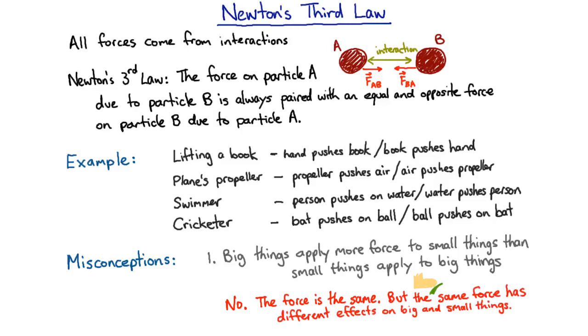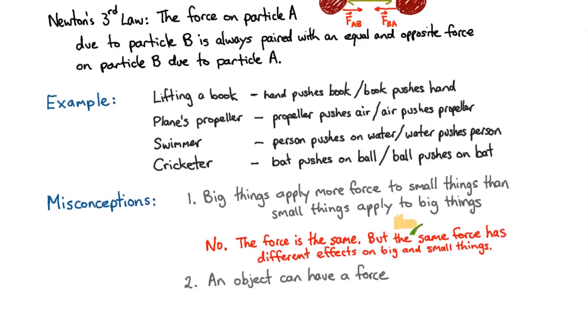The next misconception is that a force is something that an object can have. For example, a big magnet, people might say, has a big magnetic force. Or the Earth, they might say, has a large gravitational force. But the reality is that all forces come in pairs, and they're the interaction between two objects. So a big magnet doesn't have a big force. A big magnet and something else can exert an equal and opposite force on each other, which may or may not be big. Similarly, the Earth doesn't have a large gravitational force. The Earth and some other mass together can exert a mutual, equal and opposite gravitational force on each other.